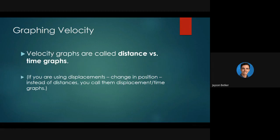These graphs are called distance-time graphs. If you're using displacement, that's fine — you just replace the word distance with displacement. Remember, the difference between distance and displacement is that distance is the total amount traveled, whereas displacement is the change from your initial to your final position. So you could drive forward 50 meters and then reverse 20 meters — your displacement would only be 30.